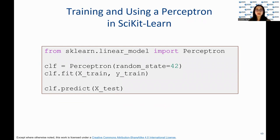This slide presents the code to train and use the perceptron algorithm in scikit-learn. The code imports the perceptron class from the sklearn.linear_model module and creates an instance of the perceptron class and sets the random state parameter to 42 for reproducibility. The fit method of the perceptron class is called with the training set, x_train and y_train, to train the perceptron. And the predict method of the perceptron class is called with the test set, x_test, to make predictions on new unseen data.